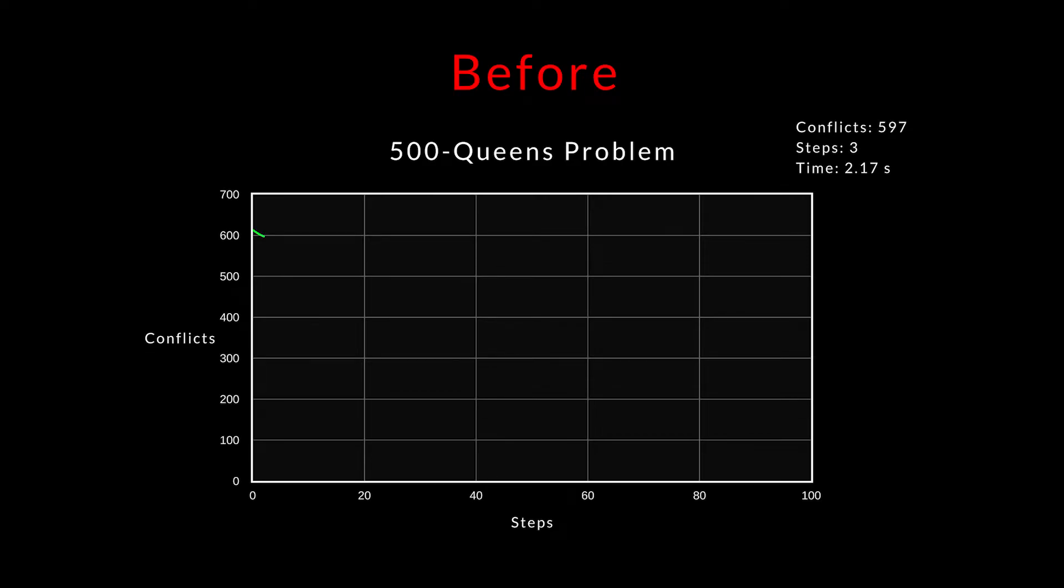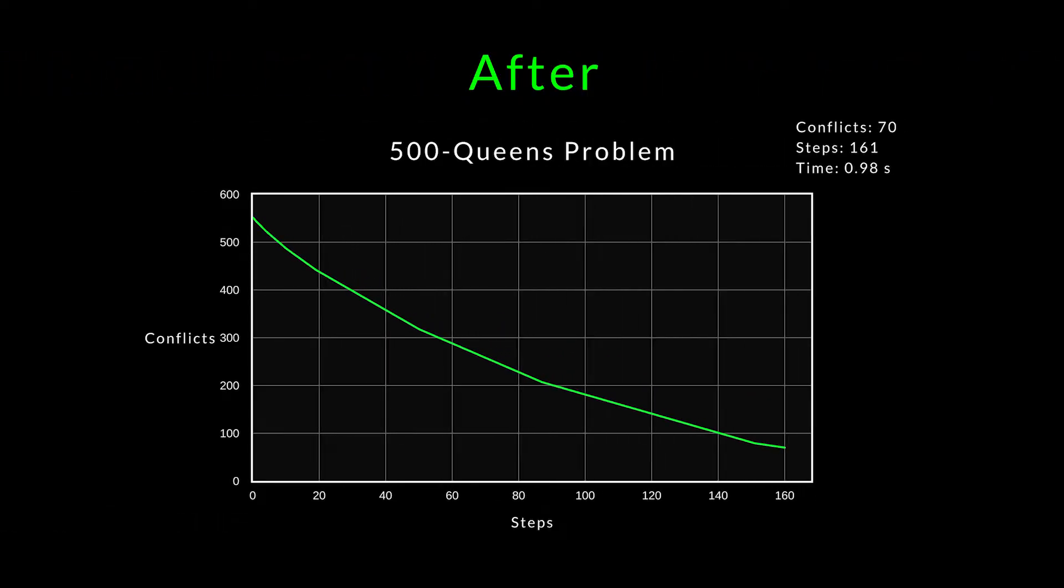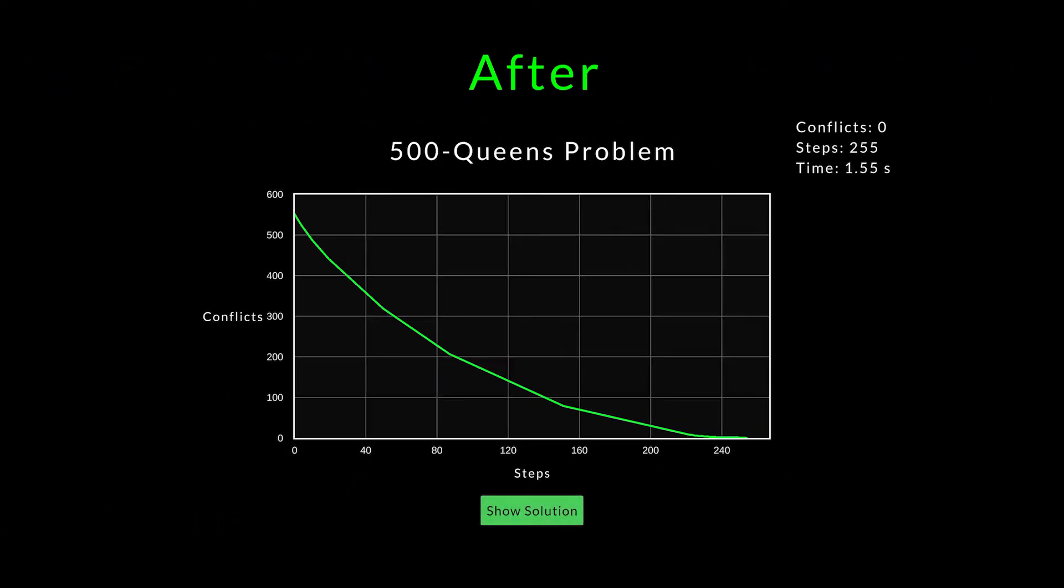Here is the 500 queens problem again, before and after this change. Look how fast it is now.